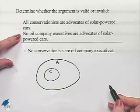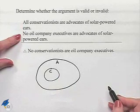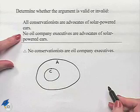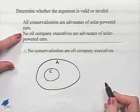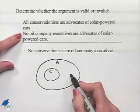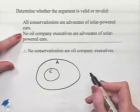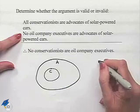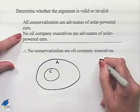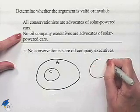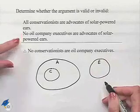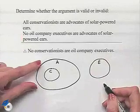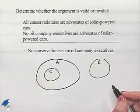Second premise: no oil company executives are advocates of solar-powered cars. What this tells us is we can have no overlap with the circle for advocacy of solar-powered cars. So our oil company executives will have to be out here, disjoint from the set we have designated for advocates.